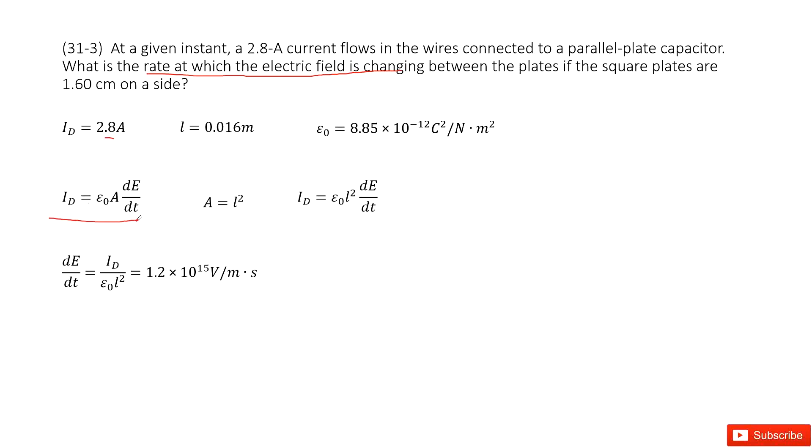This is the definition of displacement current. In this current, you can see ID is given. Epsilon naught is a constant.